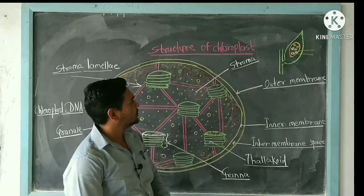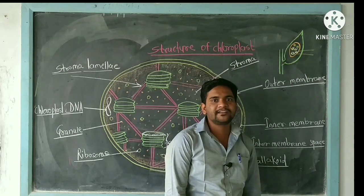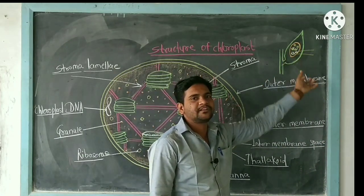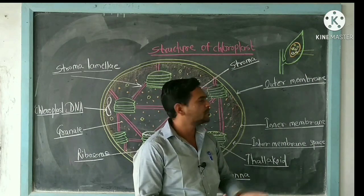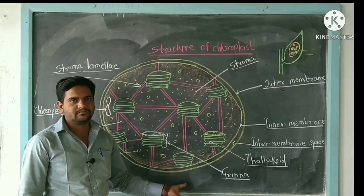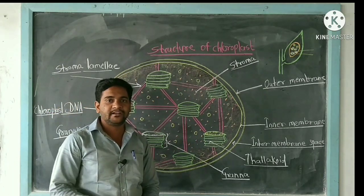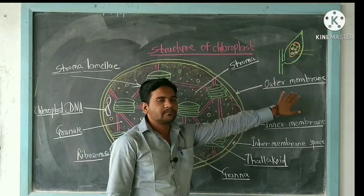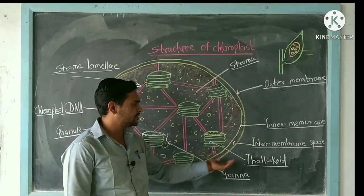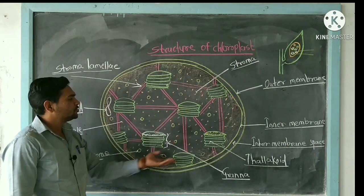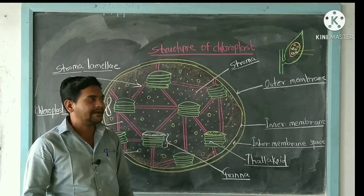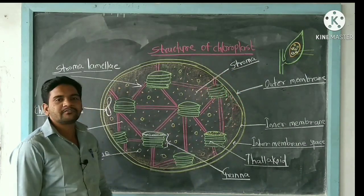Chloroplasts are present in mesophyll cells. Chloroplast is a double membrane structure, mostly oval or disc-shaped. The outer side is the outer membrane and the inner side is the inner membrane. The space between them is the inter-membrane space. The ground substance is a fluid-filled matrix known as stroma.